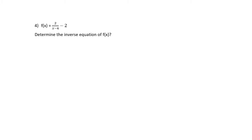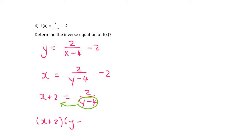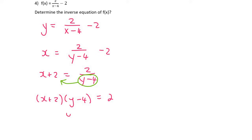In this question we are taking the inverse of a hyperbola. Step 1: rewrite the equation using y instead of f(x). Then switch x and y. Next, get y alone. Take the minus 2 over so it becomes x plus 2. Then times the (y minus 4) up — but to save time, don't multiply out separately. Just divide by (x plus 2), and then take the 4 over to get the final answer.